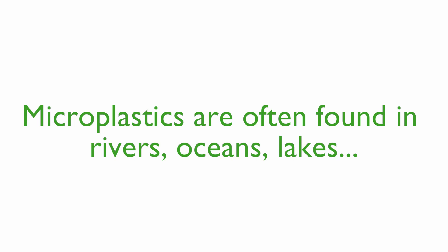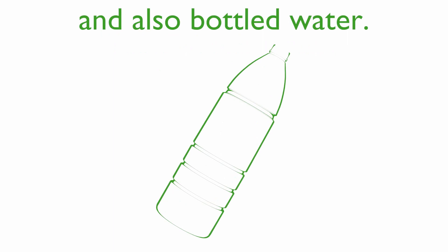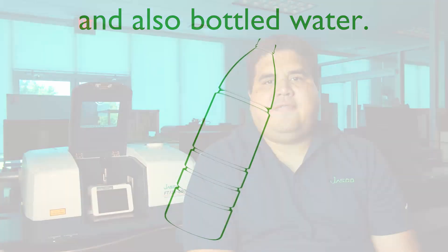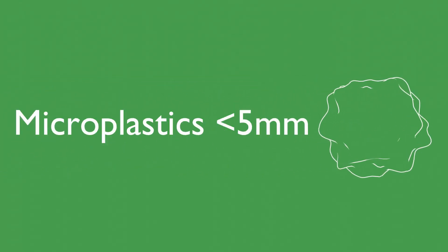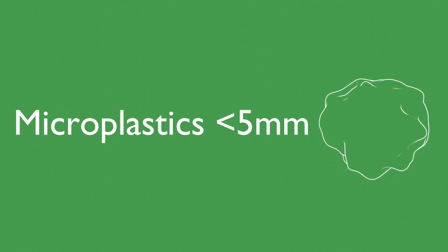Microplastics are a concern because they are present in different bodies of water, like fresh and seawater, and can even be found in bottled water. Microplastics are defined as any polymeric particle that is below 5 mm.